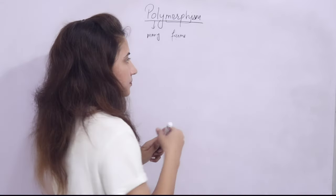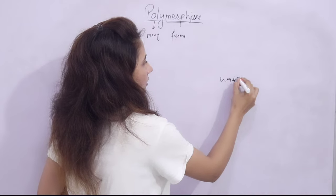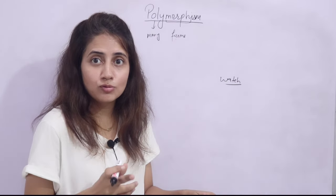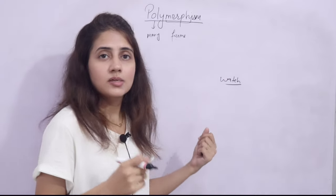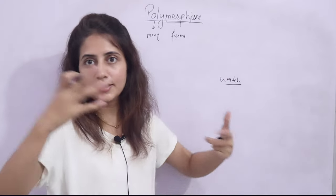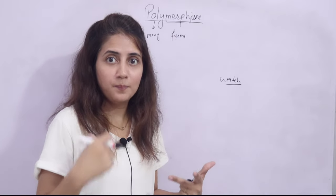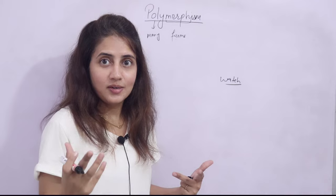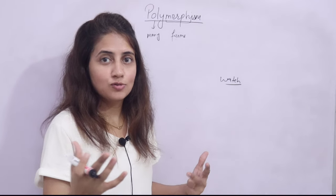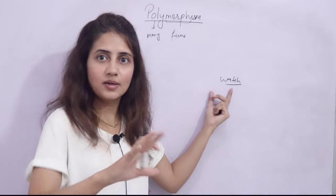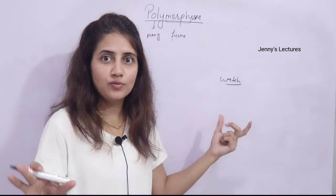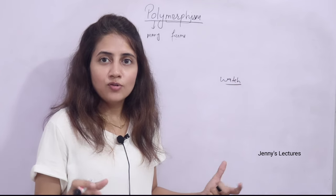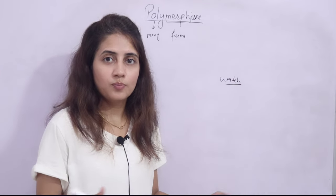You can also relate this with some words in English, like 'watch.' Watch means a wrist watch, but 'watching' also means you are watching me right now through this video. Same word but having two different meanings. We have many such words in English — this is a kind of polymorphism.